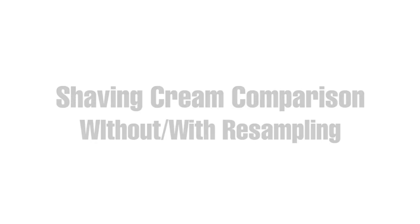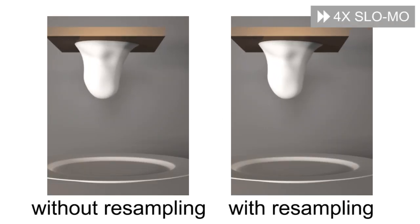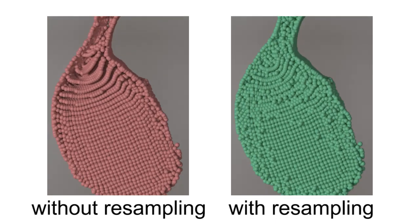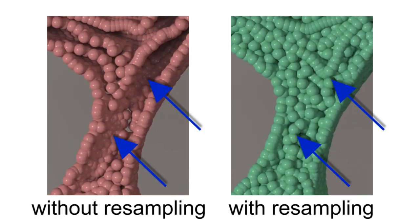Next, we demonstrate the benefits of our resampling and explicit tearing techniques. Without resampling, a sheared blob of foam can develop nonphysical empty voids. Our resampling strategy adds and removes material points as needed to eliminate this problem.